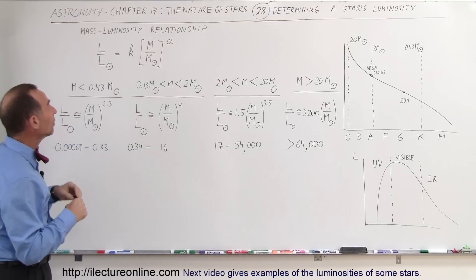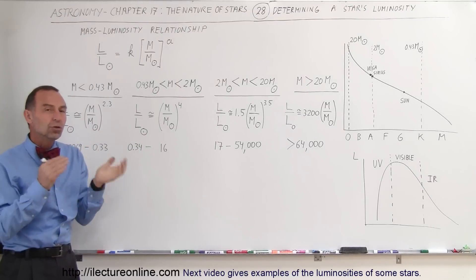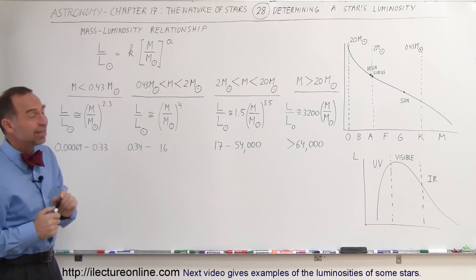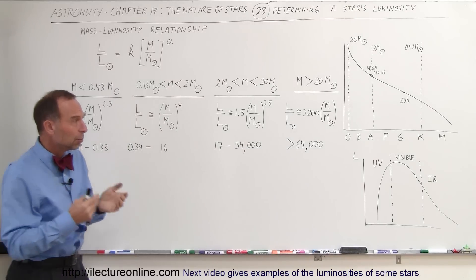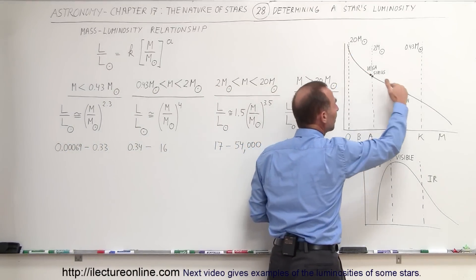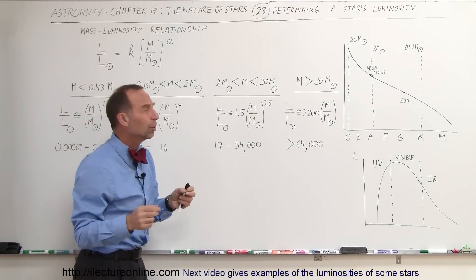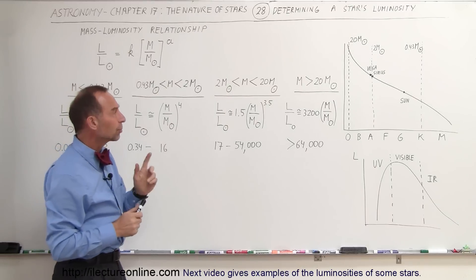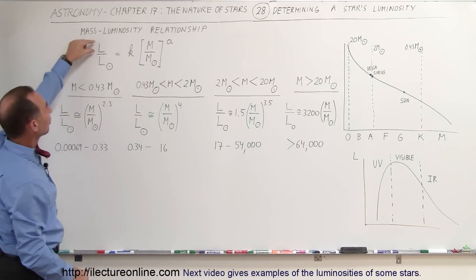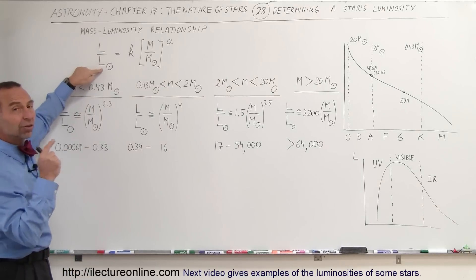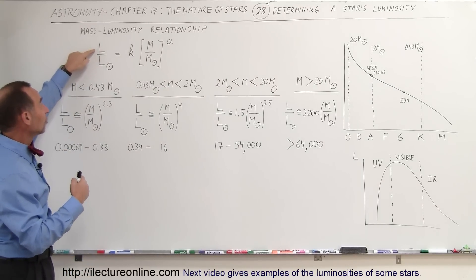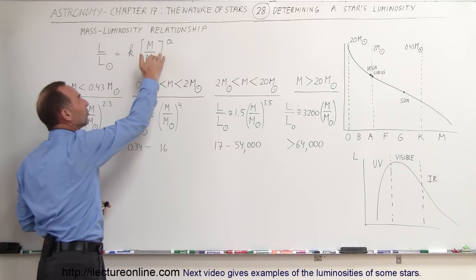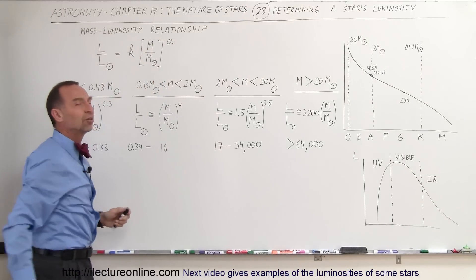We did find a mass-luminosity relationship. The luminosity of a star often has to do with how much mass it has, especially for main sequence stars. If we determine where on the main sequence a star appears, we can determine how much mass it has, and from that we can find a mass-luminosity relationship. The general relationship is that the luminosity of a star relative to the luminosity of the sun equals some constant times the ratio of the mass of the star to the mass of the sun, raised to some exponent.